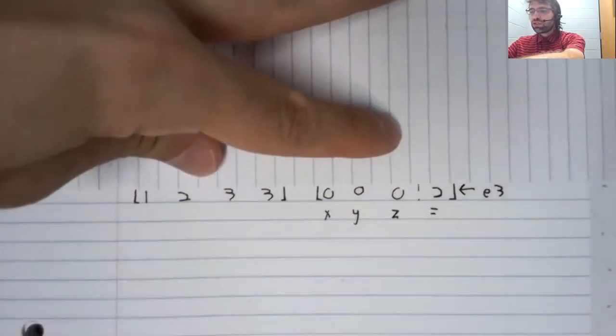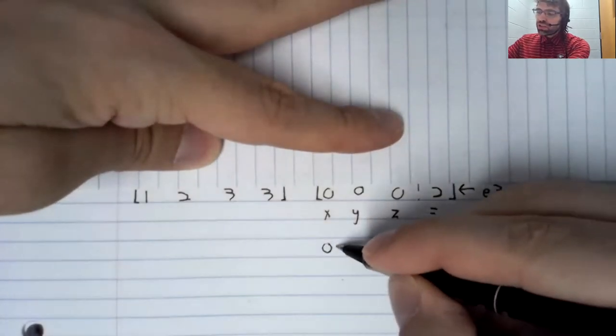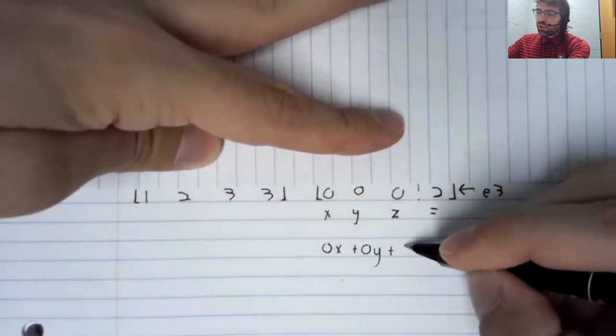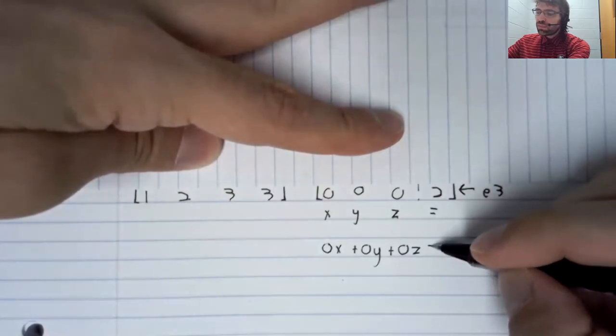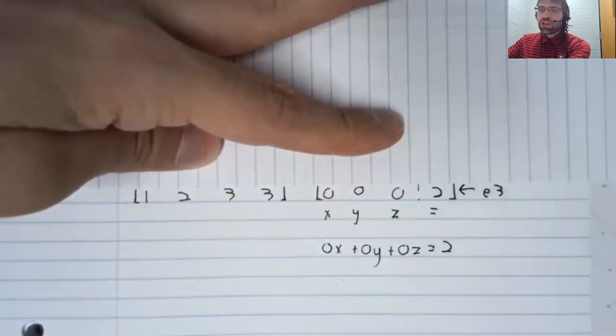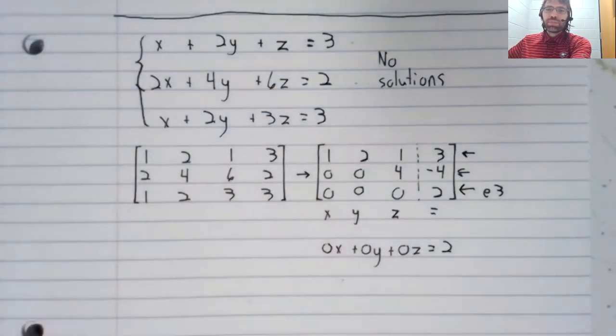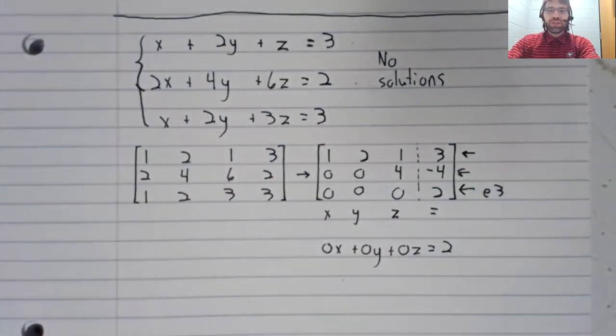And in particular, then, what this last row is telling you is that 0x plus 0y plus 0z equals 2. And this is an equation with no solutions. And because to be a solution to the system, you have to be a solution to each of the individual equations, that means that the system has no solutions.